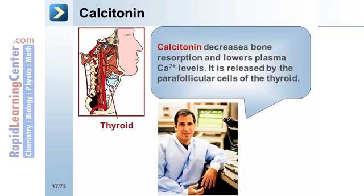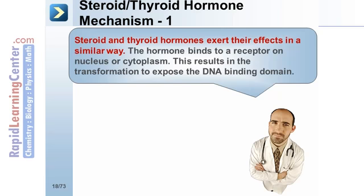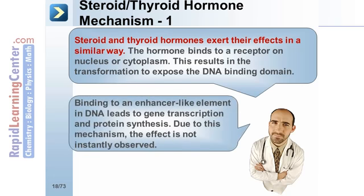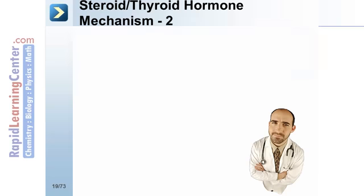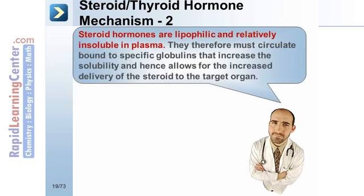Calcitonin decreases bone resorption and lowers plasma calcium levels. It is released by the parafollicular cells of the thyroid. Steroid and thyroid hormones exert their effects in a similar way: the hormone binds to a receptor on the nucleus or cytoplasm, which results in the transformation to expose the DNA binding domain. Binding to an enhancer-like element in the DNA leads to gene transcription and protein synthesis. Due to this mechanism, the effect is not instantly observed. Steroid hormones are lipophilic and relatively insoluble in plasma, and therefore must circulate bound to specific globulins that increase solubility and allow for increased delivery of the steroid to the target organ.